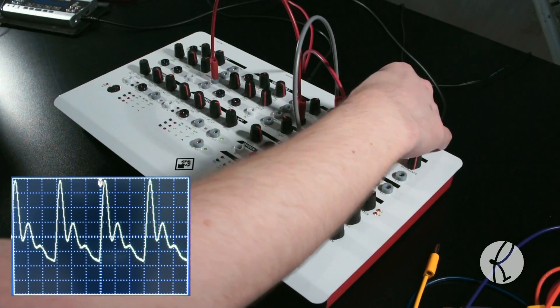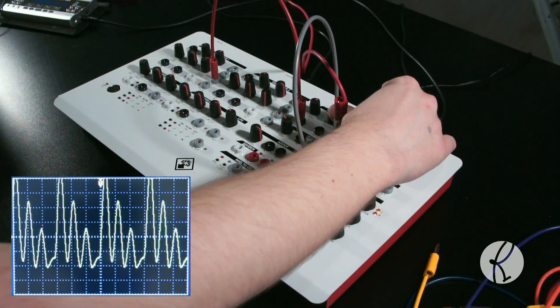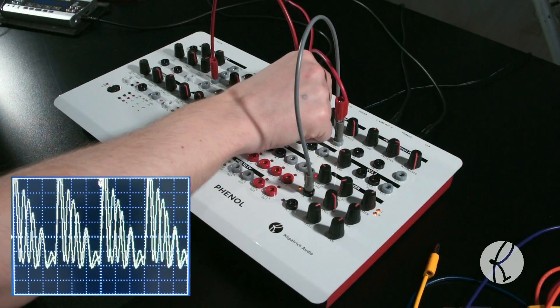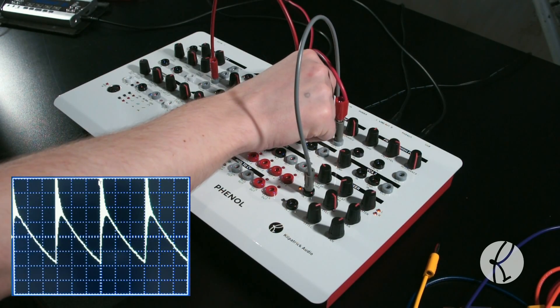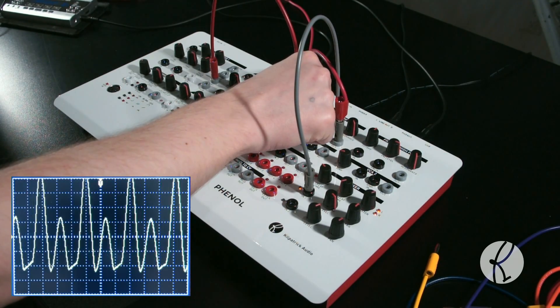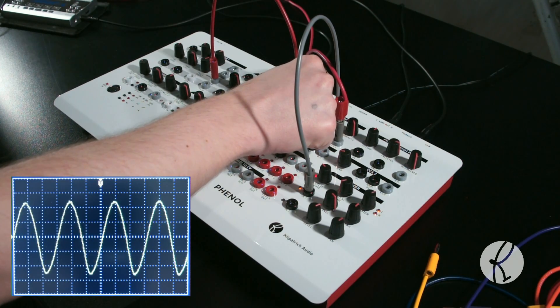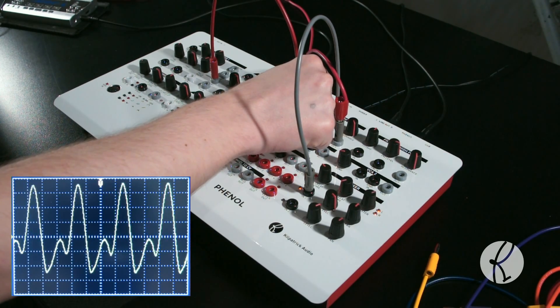The resonance control affects how the frequencies around the cutoff point will be boosted. Turning up the resonance control adds more ringing to the signal. This corresponds to a fatter sound.